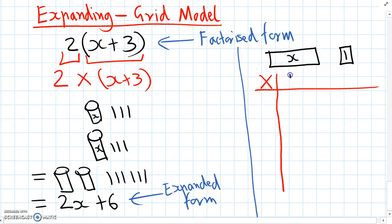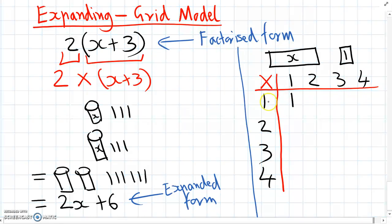This grid is just like when we learn our times tables. With our times tables, we write our factors along the edges and then we multiply in the middle. So one times one is one, one times two is two, two times two is four, two times three is six, and so on.